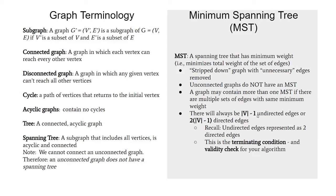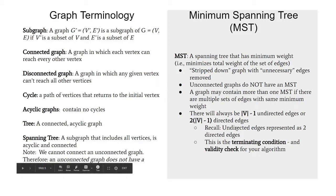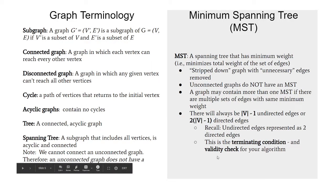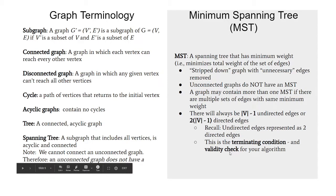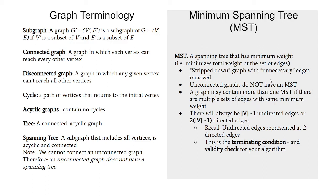The reason for V minus 1 edges is that since it's a tree and can't have any cycles, this is the only possible number of edges you can have. If you're interested in proving this fact, you can do it by induction — it's a pretty interesting proof. This condition is important because it's both a terminating condition and a validity check for our algorithm. It deals with the fact that some graphs don't have an MST, and there's really no way of knowing that until we try to make it ourselves.